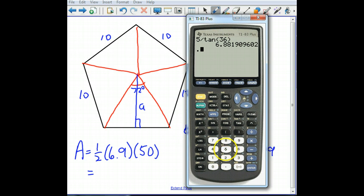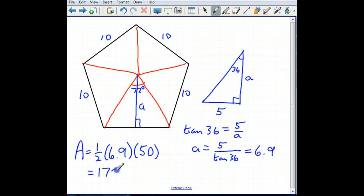That'll be .5 times 6.88 times 50, 172 square units. And that's how you find the area of a regular polygon.